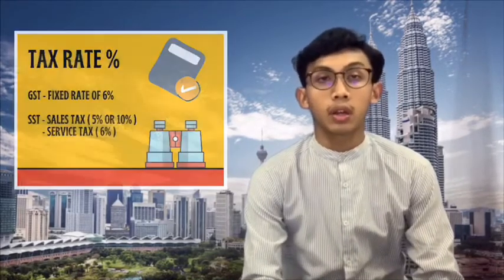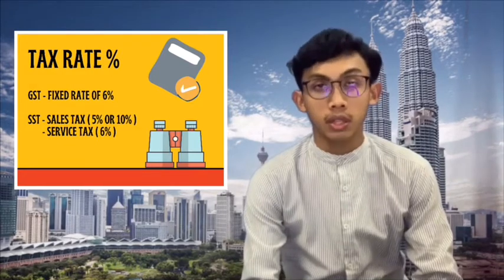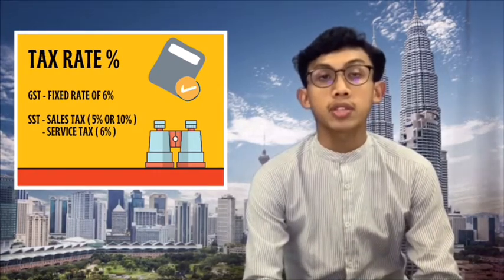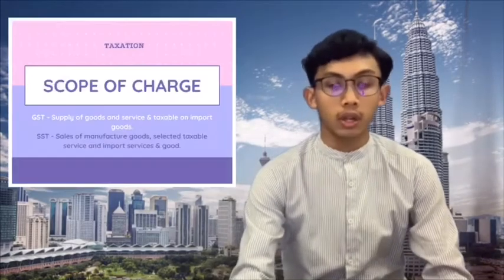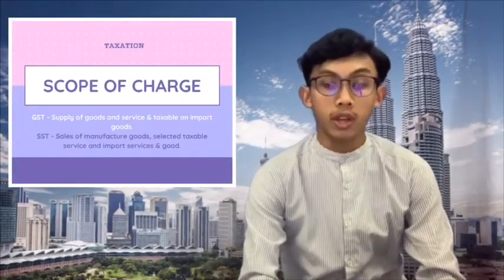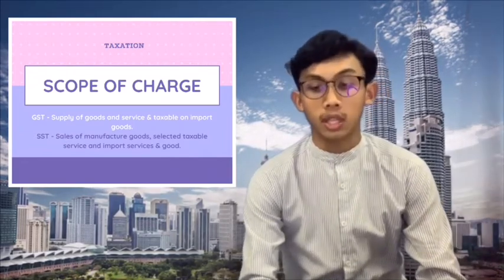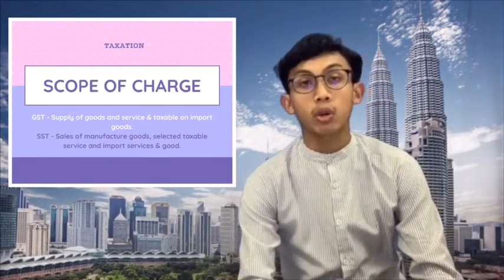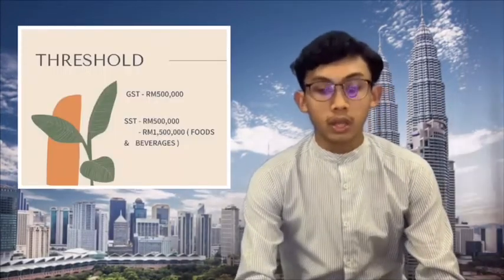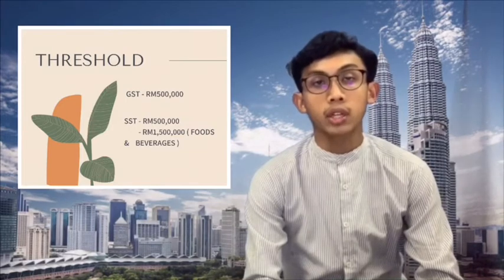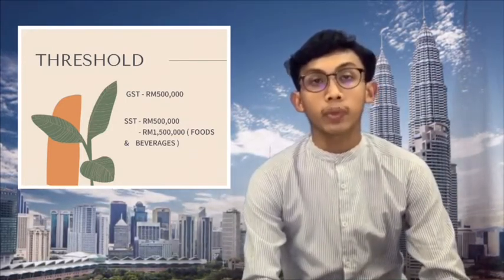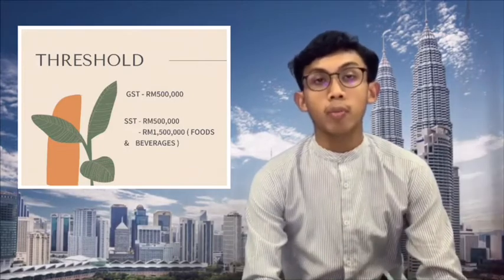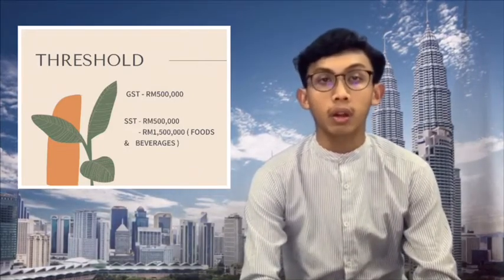The third comparison is the rates: GST is at a flat 6%, while SST is 5% or 10% for sales tax. The fourth is the scope of charge: for GST, it covers a broad range of goods and services and is also applicable on imported goods. For SST, the scope of charge covers sale of manufactured goods, selected taxable services, and also import services and goods. The fifth is the threshold: for GST, the threshold is RM500,000 — exceeding this amount allows a claim for the tax. It is similarly structured for SST, but for the food and beverage industry, the threshold must exceed RM1.5 million to qualify.